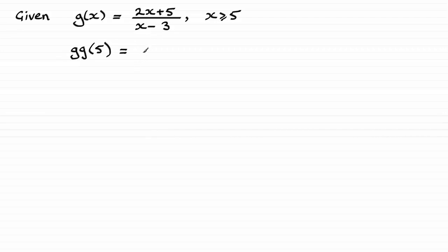And that means we're going to have g of, I'll put this in a square bracket here, g of 2 times 5. I'll show a little bit of working as well. 2 times 5 plus the 5, and that's all over 5 minus 3.